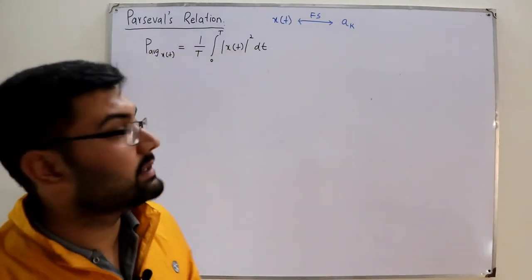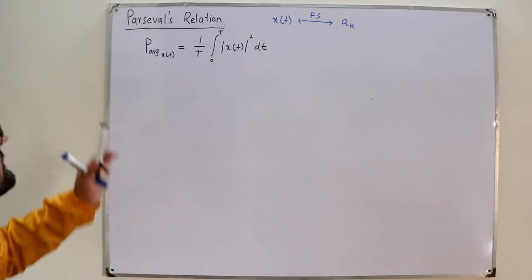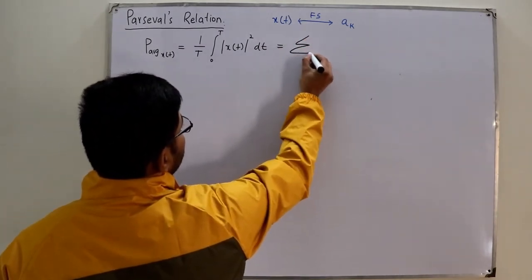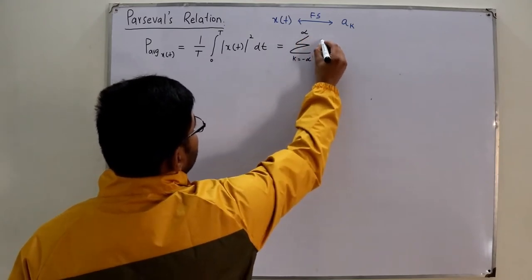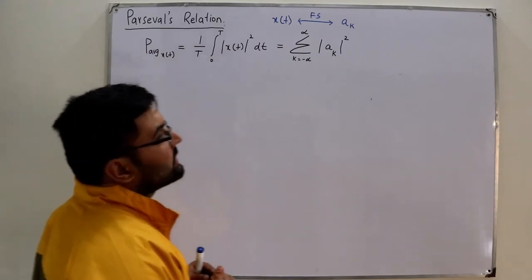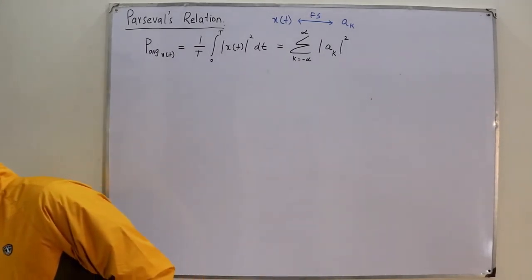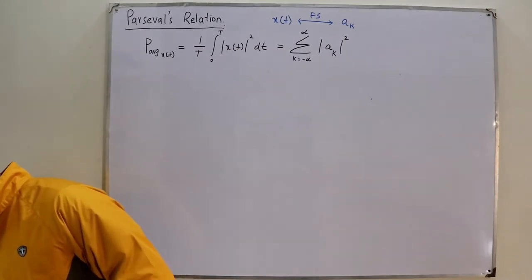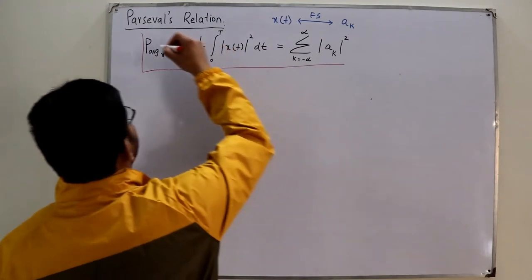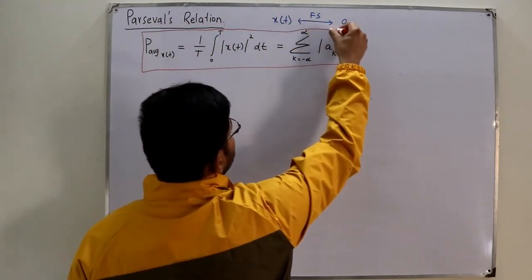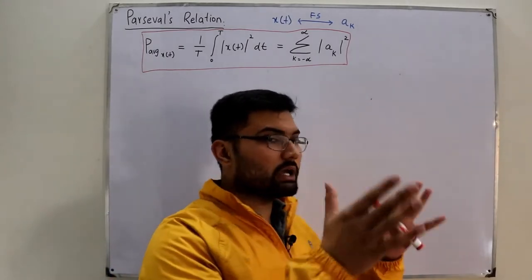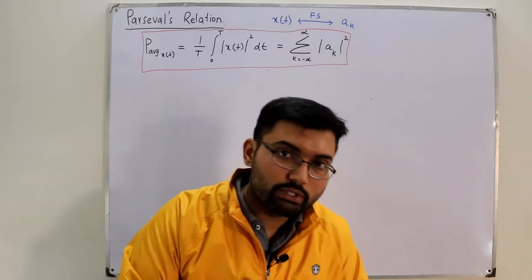Parseval says that you can find the average power of a signal by taking the summation with k running from negative infinity to positive infinity, taking the absolute value of the Fourier coefficients and squaring them. This will give you the same result — the average power. The average power can be computed by summing the squares of the magnitudes of all the Fourier coefficients.